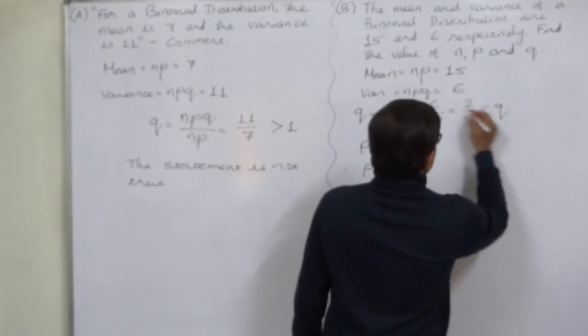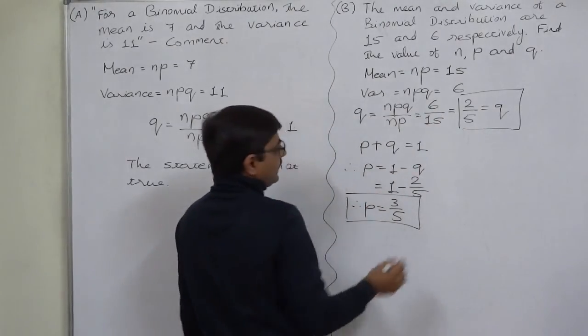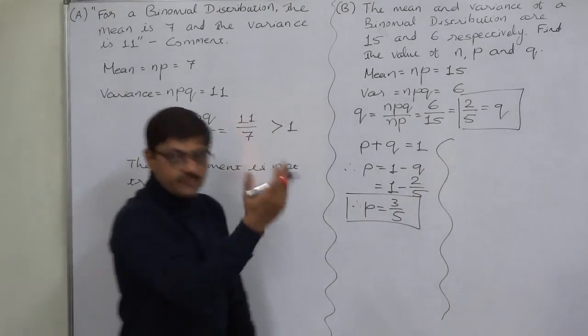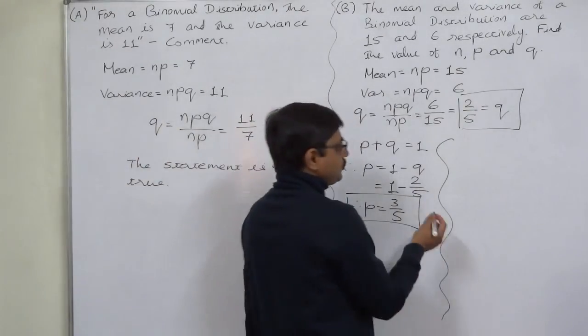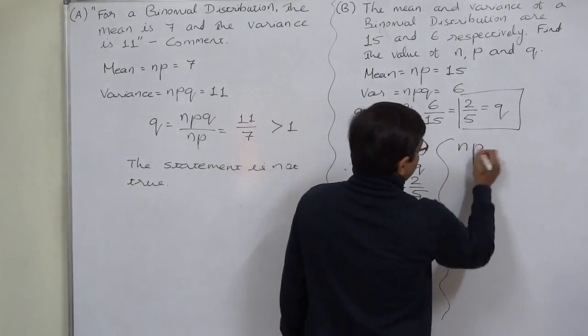So now out of three, we have found two answers, P and Q, and now we require to find out n, that is number of trials in case of a binomial distribution.